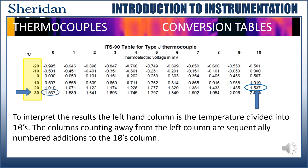Let's practice. Let's look for 30 degrees. That's easy. It's in its own row under the zero column. But it was also found on the 20 row in the 10th column. They are both 1.537 millivolts, which is perfect because 30 equals 20 plus 10. That's easy. Now let's look at the negative values.